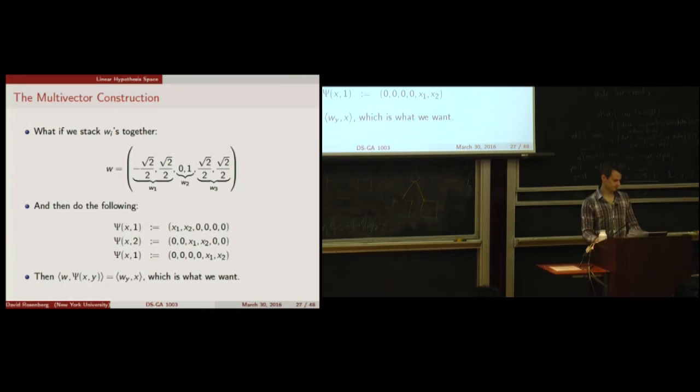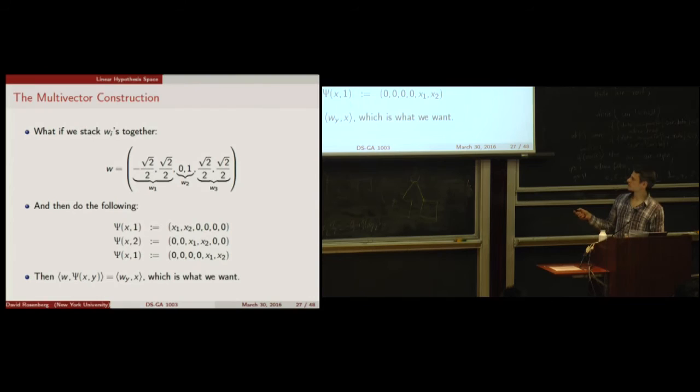The class Y is incorporated into the feature map by position: depending on what class is plugged in, we put X1 and X2 in a different position. So psi(X, Y) — the slot for the class determines which block of the feature vector is populated. This strategy of stacking is sometimes called the 'multi-vector' approach.